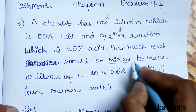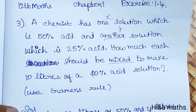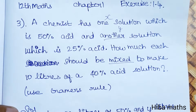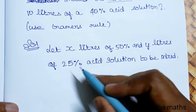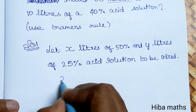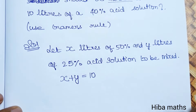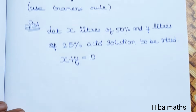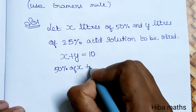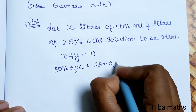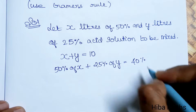So we need to satisfy two conditions: the total volume should be 10 liters and the percentage should be 40%. Let x liters of 50% acid and y liters of 25% acid be mixed. So x + y = 10 liters — this is the first equation. And 50% of x plus 25% of y gives a 40% acid solution.